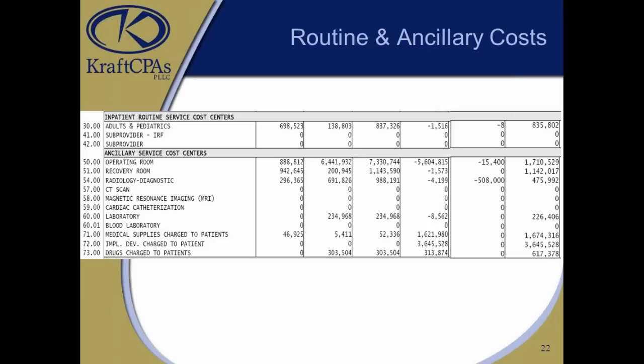Note on line 72 that implants have been broken out from chargeable supplies — something new CMS did on cost reporting forms last year. This is very important. For outpatient surgeries, high-cost outliers for implants and devices cost a lot more to provide. If you break those out and get a true cost-to-charge ratio not being deflated by other supplies, it can ultimately help with outlier reimbursements.